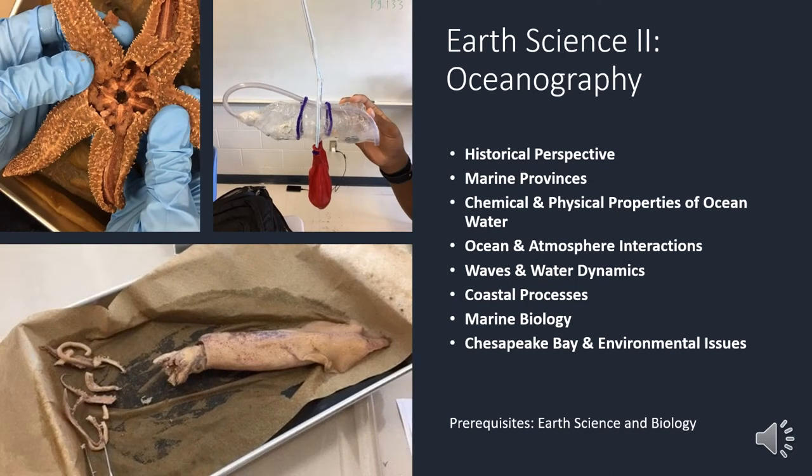Oceanography is a survey course that introduces students to the four broad disciplines of marine science: chemical, physical, geological, and biological oceanography. Building on knowledge gained in Earth Science 1, students will investigate tectonic processes and their role in shaping the ocean basins. Students will also investigate the physical and chemical properties of the oceans and their interplay with the atmosphere, as well as their impact on coastal features and marine life.